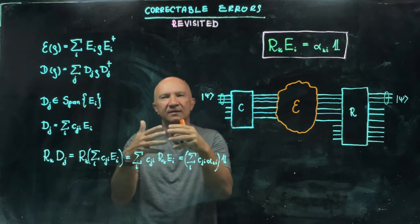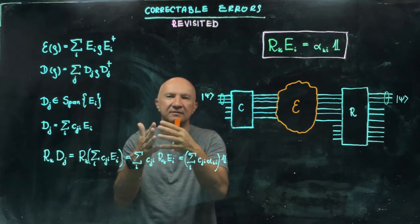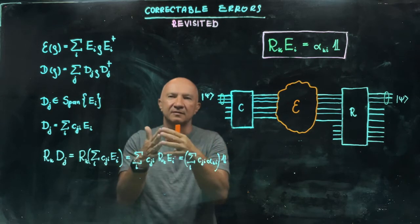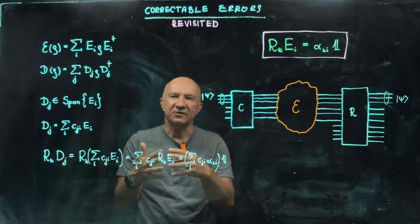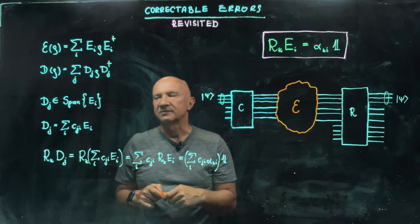More than that, you can define Hilbert-Schmidt product. And this turns this vector space into Hilbert space.